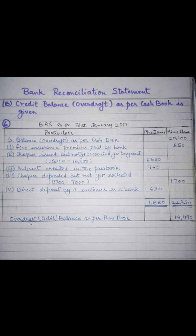After writing all entries, we balance both columns. The total of plus items is 7,860 rupees and the total of minus items is 22,350 rupees. The difference of 14,490 rupees is the overdraft, or debit balance, as per our passbook — an unfavorable condition. I hope you all have understood the question. Thank you.